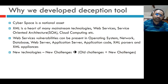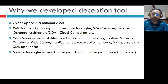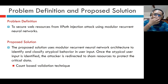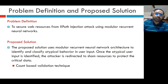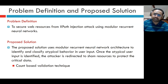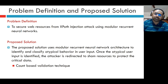New technologies always bring new challenges, but they also carry old challenges. Our problem definition is to secure web resources from XPath injection attacks using modular recurrent neural networks. Our proposed solution uses a modular recurrent neural network architecture to identify and classify atypical behavior in user input. Once the atypical user input is identified, the attacker is redirected to fake resources to protect the critical data.